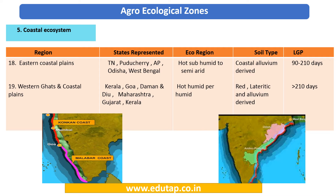The fifth ecosystem is the coastal ecosystem. Peninsular India has two coasts: the west coast along the Arabian Sea and the east coast along the Bay of Bengal. For the eastern coastal plains, the states covered are Tamil Nadu, Puducherry, Andhra Pradesh, Odisha, and West Bengal. The eco-region is hot sub-humid to semi-arid, the soil type is coastal alluvium-derived, and the length of growing period is 90 to 210 days.